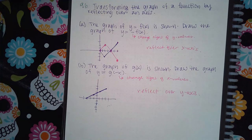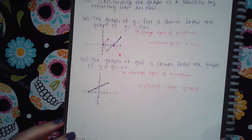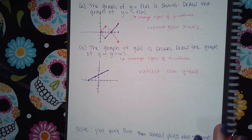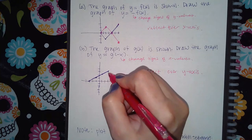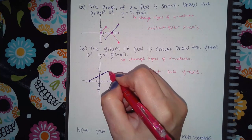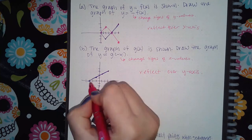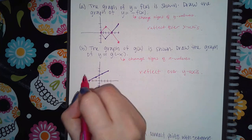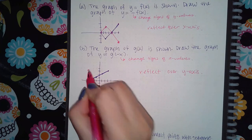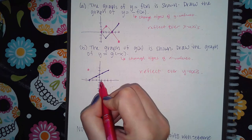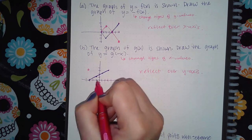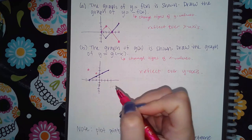Now, for part b, the negative is on the inside. So now I have to change the signs of the x values. So this point, which was positive 3 and positive 3, is now going to become negative 3 and still positive 3 for y. This one is 1 and positive 2, so now it's going to be negative 1 and positive 2.